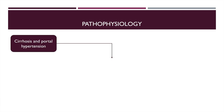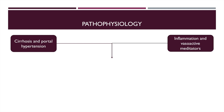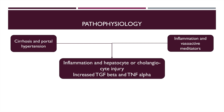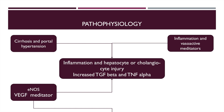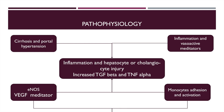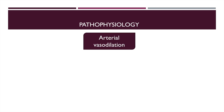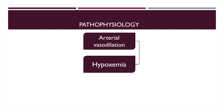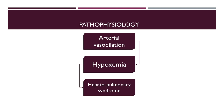The pathophysiology of hepatopulmonary syndrome begins in a patient with cirrhosis and portal hypertension who also has inflammation and vasoactive mediators in the serum. This results in inflammation and injury of the hepatocyte or cholangiocyte, along with increased transforming growth factor beta and tumor necrosis factor alpha. Combined with endothelial nitric oxide synthetase, vascular endothelial growth factor, and monocyte adhesion and activation, this results in arterial vasodilatation, hypoxemia, and ultimately hepatopulmonary syndrome.